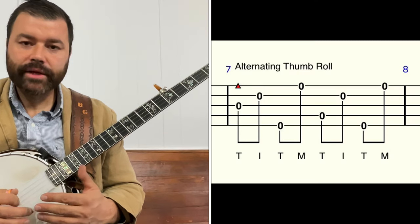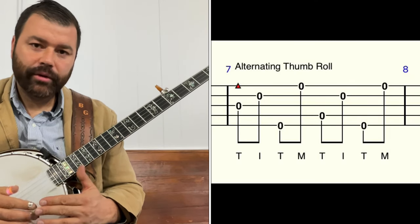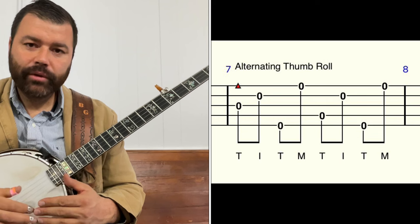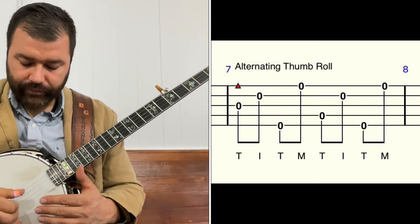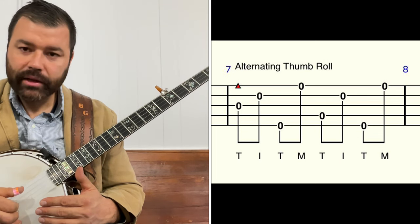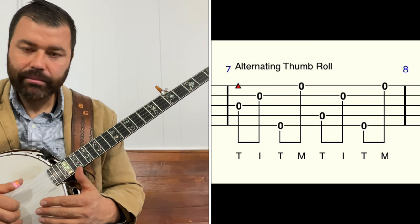Next is an alternating thumb roll. The alternating thumb roll goes three, two, five, one, four, two, five, one — and that's going to be with thumb, index, thumb, middle.